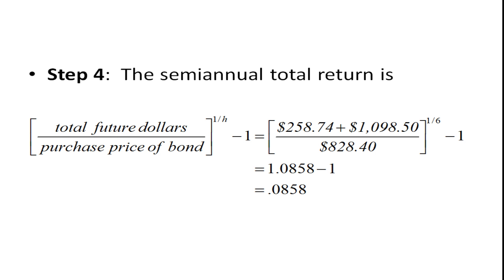So step four, let's calculate that semi-annual return. The total future dollars are going to be the coupons plus the interest on interest, plus the price we sell the bond for, divided by the price we paid for the bond,